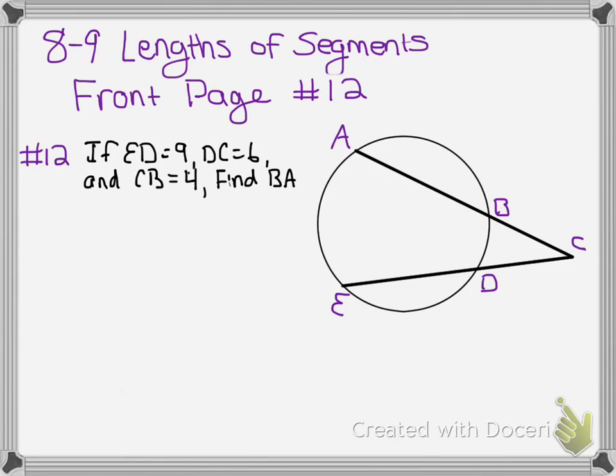And the question reads, if ED equals 9, DC equals 6, and CB equals 4, find BA.